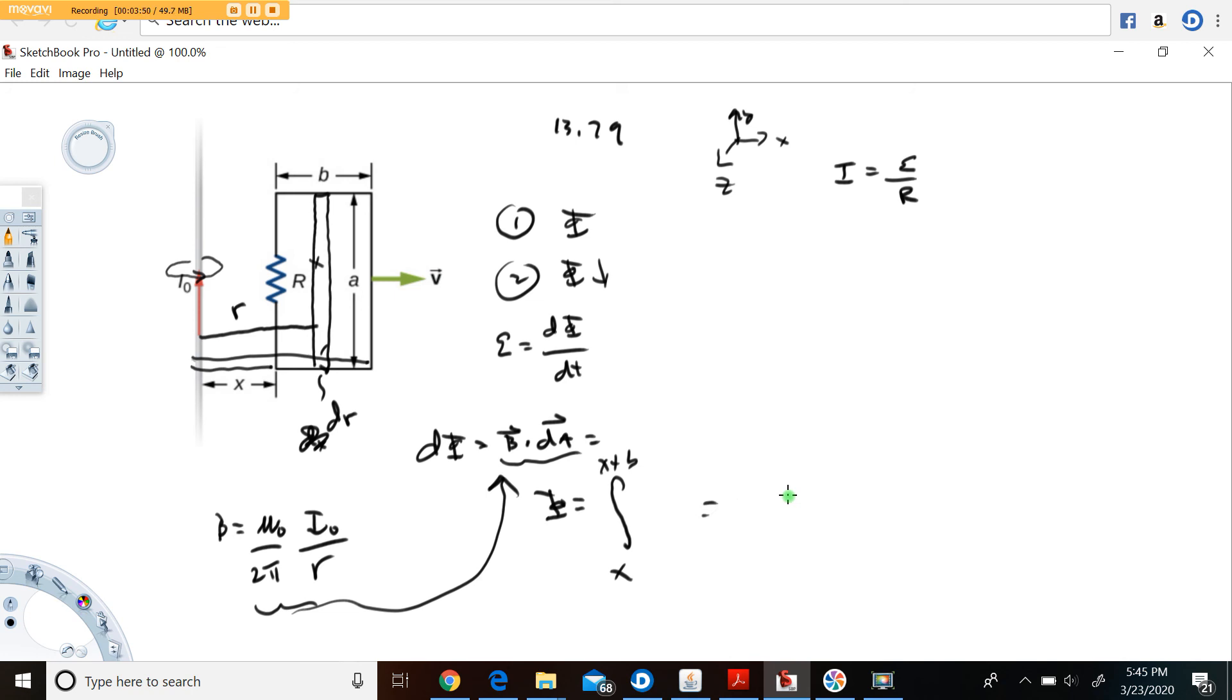So, work this out, you're going to get some sort of expression. Once you have that expression, it's going to be some function of, it should probably have the a, the b, no doubt it will have that current, probably have the x as well.